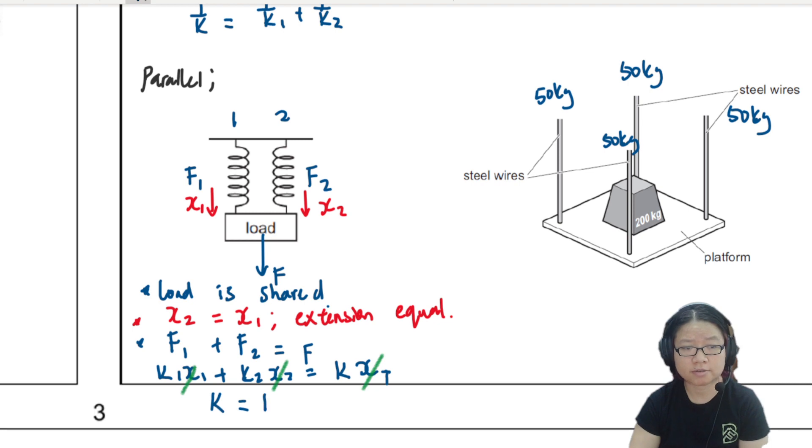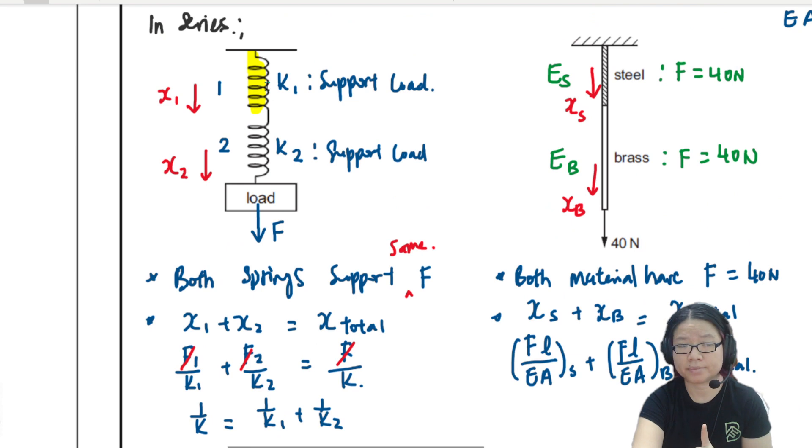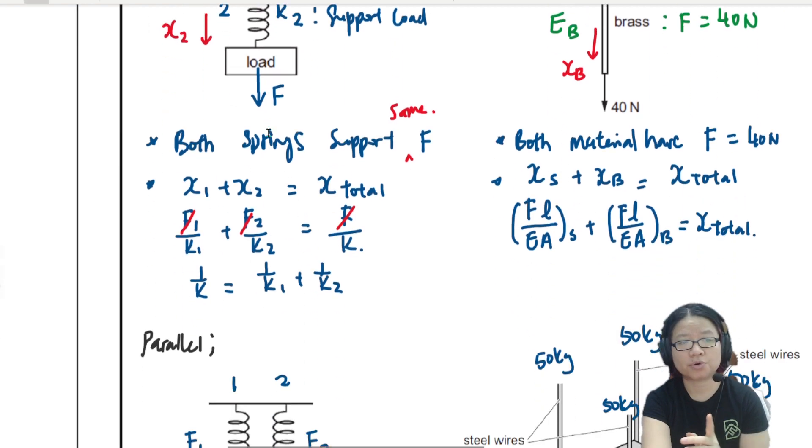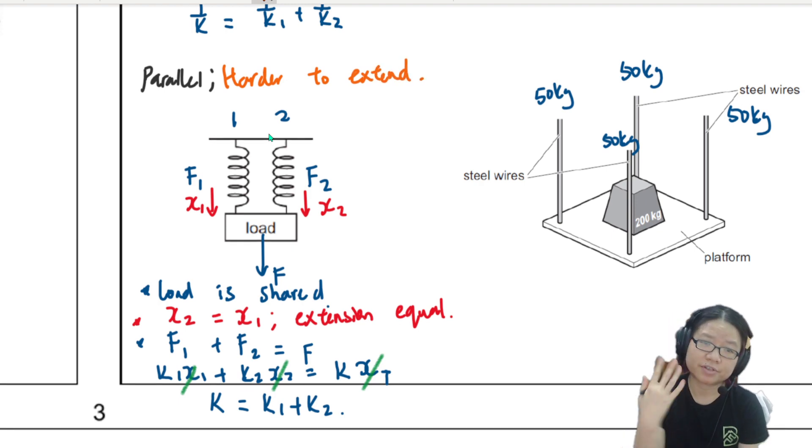So finally, spring constant, the final spring constant is just the sum. So let's compare this with the series arrangement. This thing is easier to extend. So in series, generally speaking, the system is easier to extend. You need less force for the same extension. Whereas parallel is more stable, it's harder. You need more force to extend.